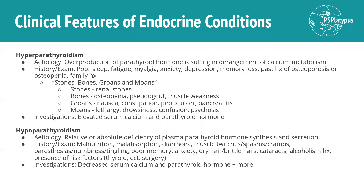The clinical features of hyperparathyroidism and hypoparathyroidism are also useful to know, although probably not as high yield. Hyperparathyroidism is the result of overproduction of parathyroid hormone, resulting in derangement of calcium metabolism. History and exam findings include poor sleep, fatigue, myalgia, anxiety, depression, memory loss, history of osteoporosis, osteopenia, fractures, and family history. A useful mnemonic is stones, bones, groans, and moans: stones — renal stones; bones — osteopenia; groans — nausea, constipation, peptic ulcer; moans — lethargy, drowsiness, confusion. Investigations show elevated serum calcium and parathyroid hormone.